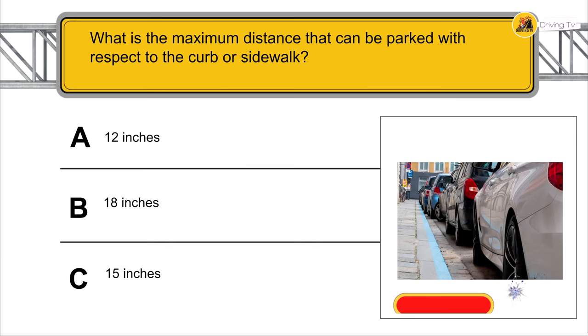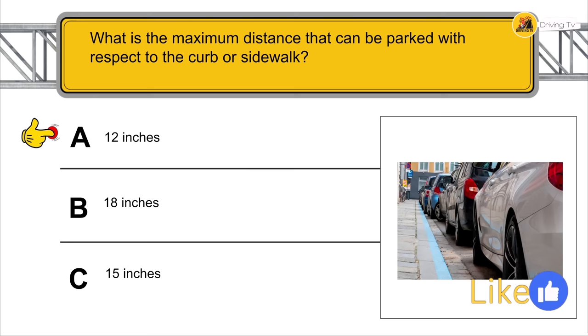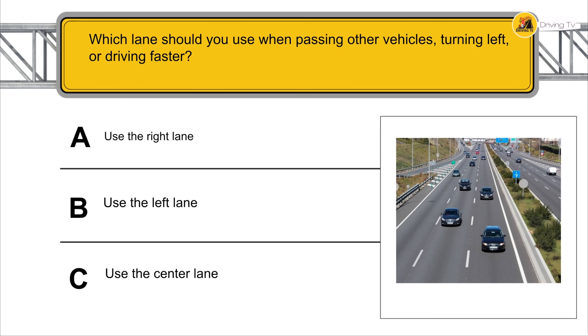What is the maximum distance a vehicle can be parked with respect to the curb or sidewalk? 12 inches.